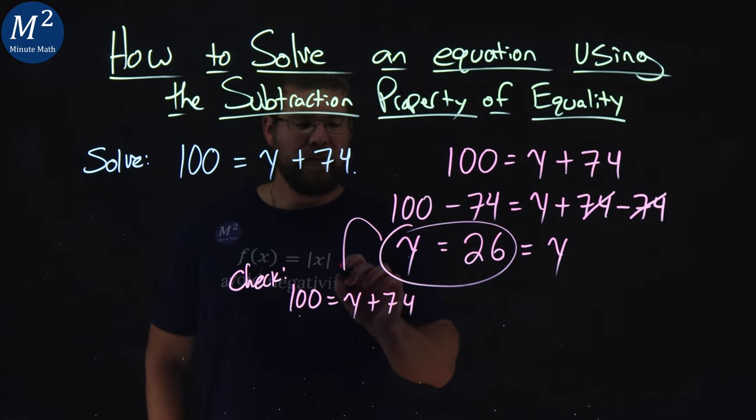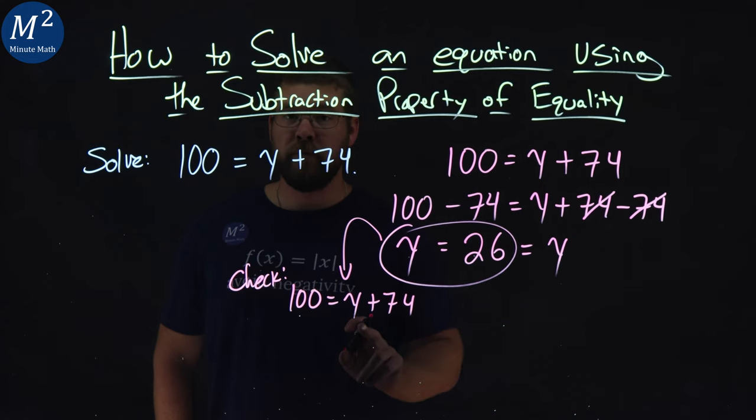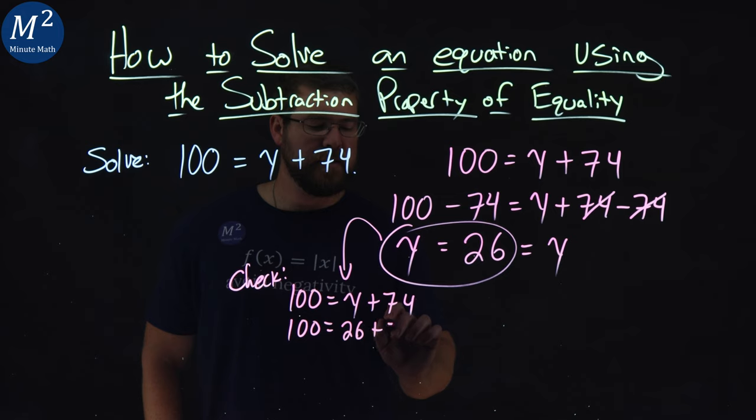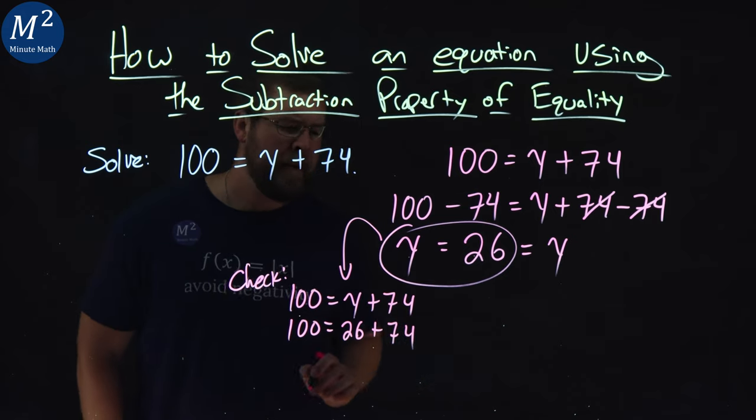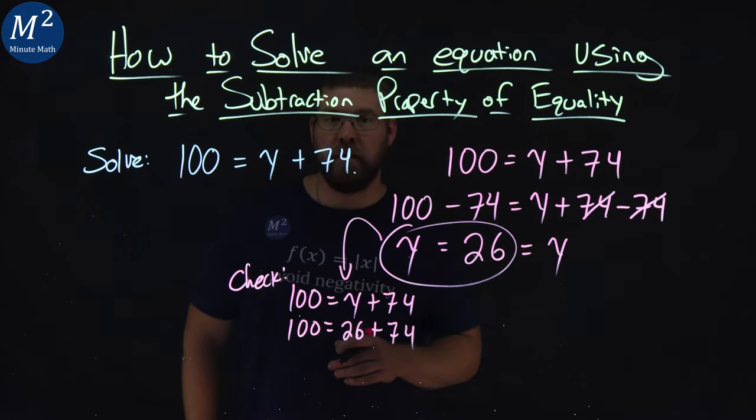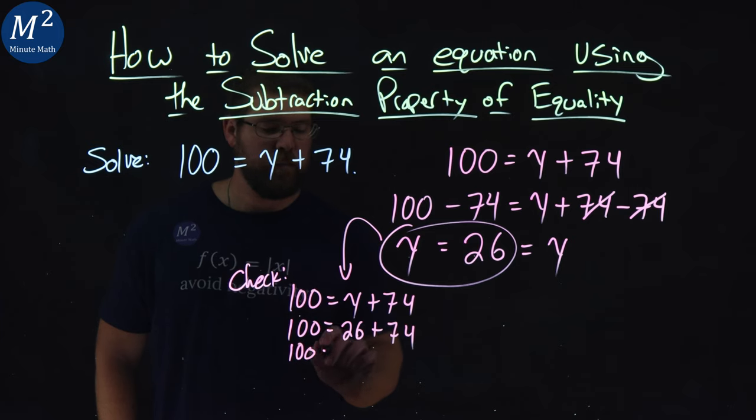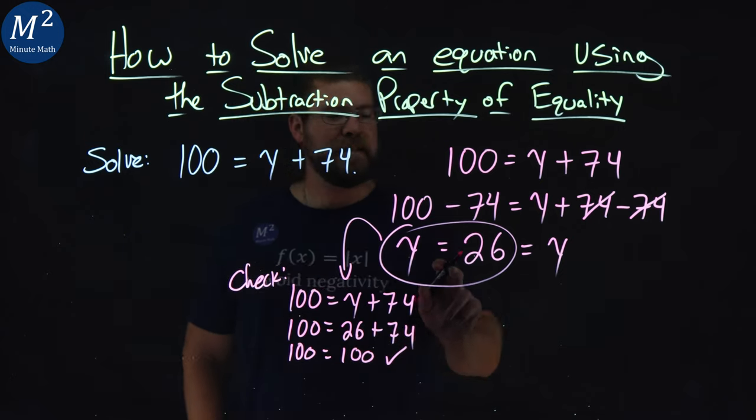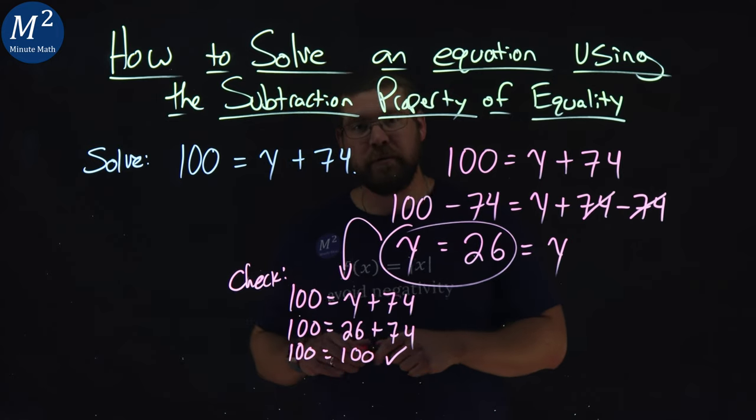And what I'm going to do is take that 26 and plug it in for y. 100 equals 26 plus 74. And now we're going to see if the left and right-hand side are equal. 100 equals 26 plus 74 comes out to be 100 as well. It checks out. Meaning that 26 is a solution to our equation.